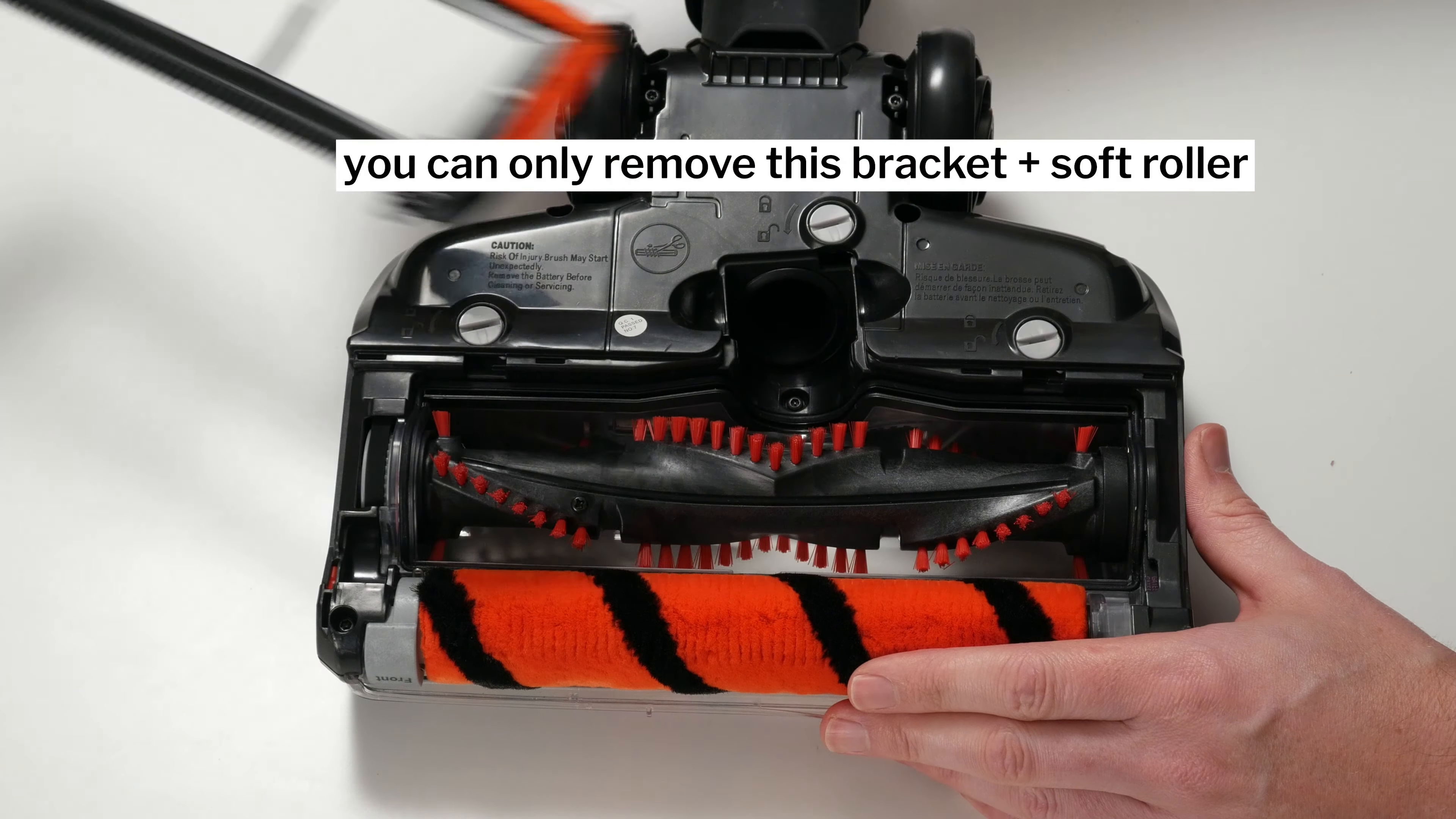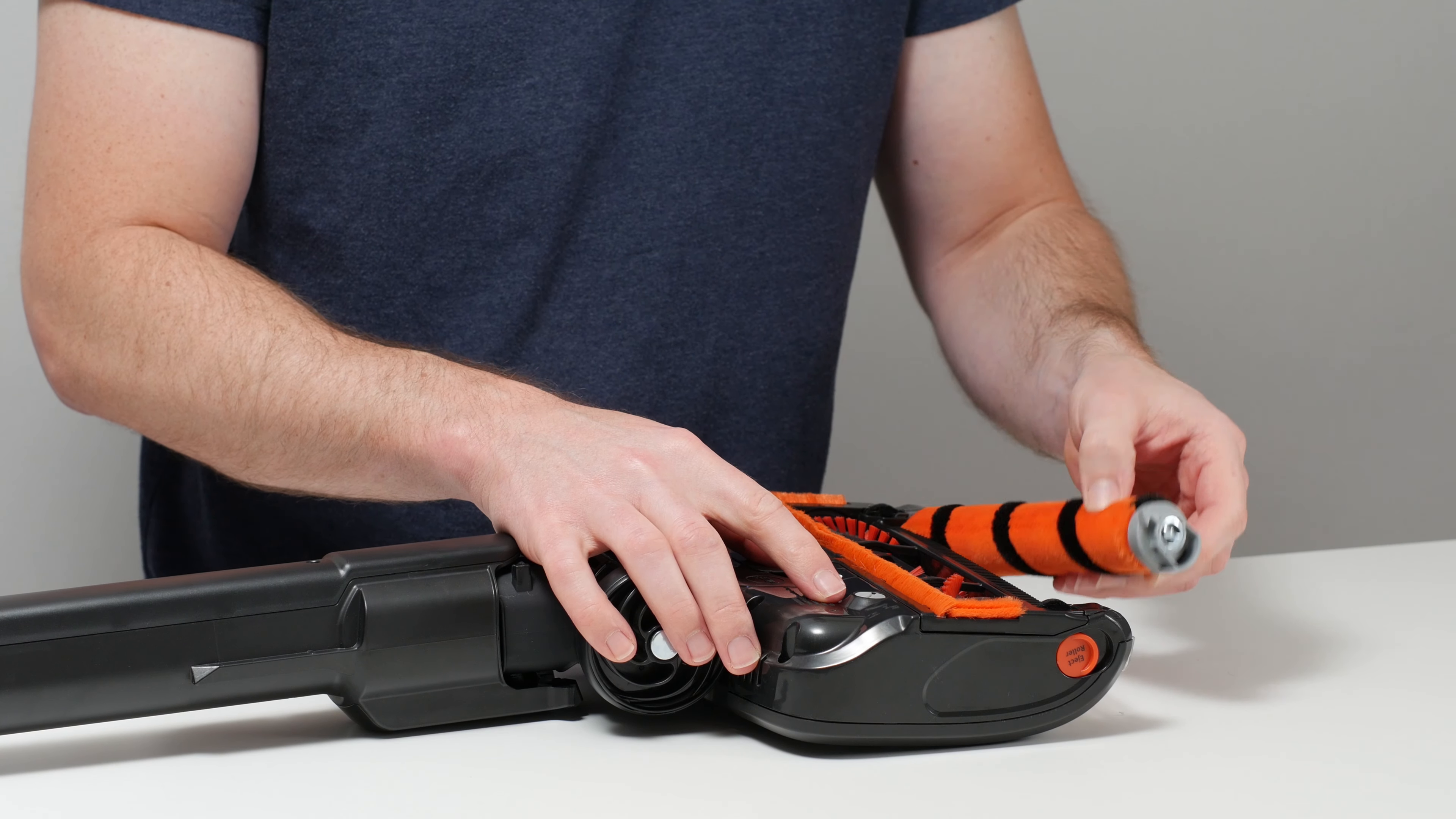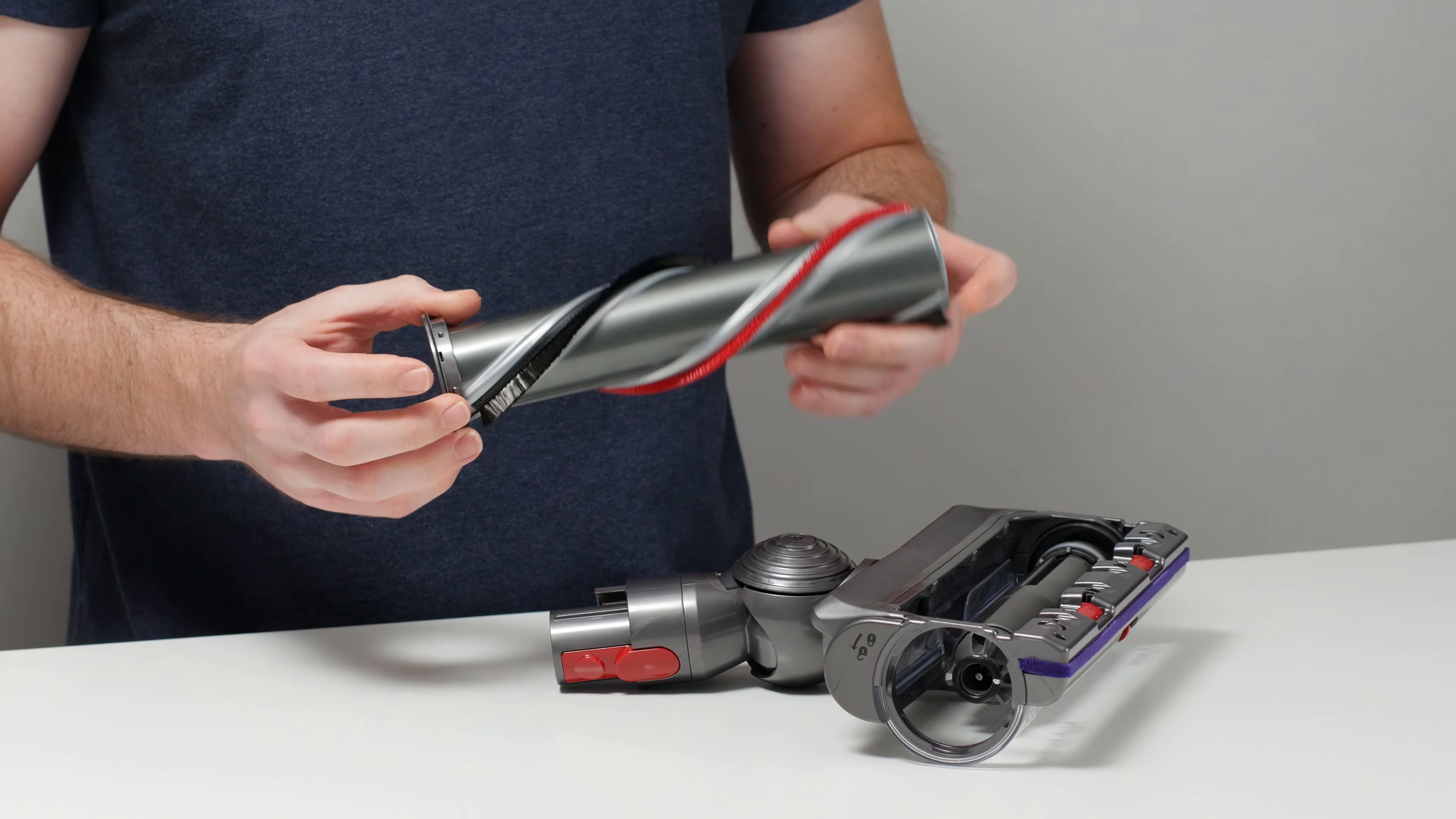It is of note here that you cannot remove the carpet agitator brush roll from the P50. You can only remove the soft roller from this particular vacuum, while you can remove the single brush roll from most other cordless vacuums very easily.